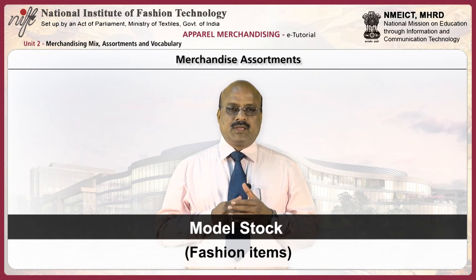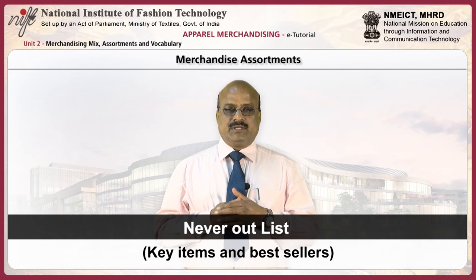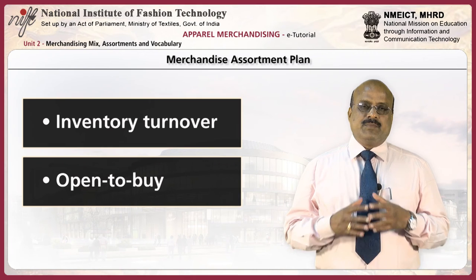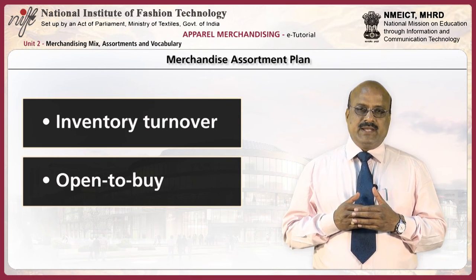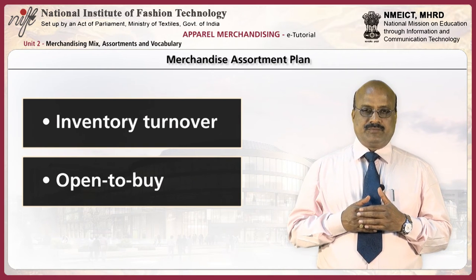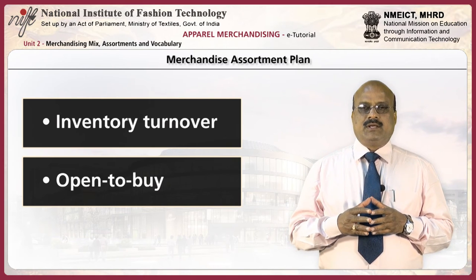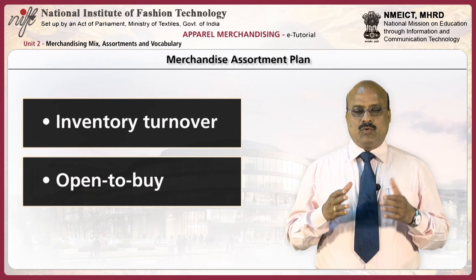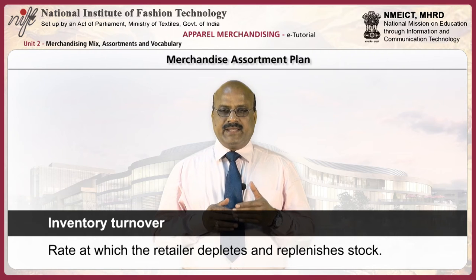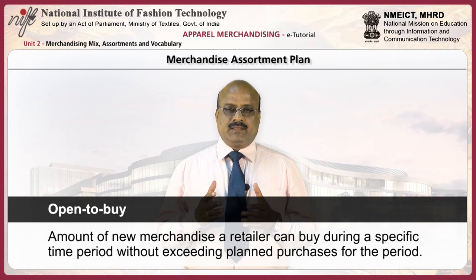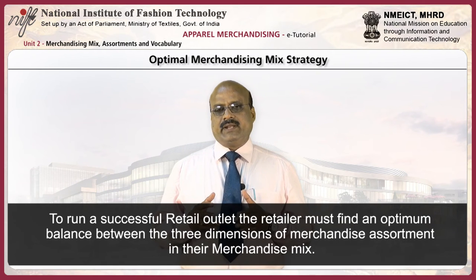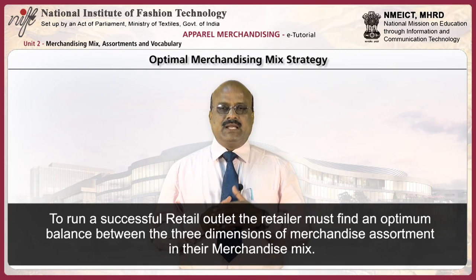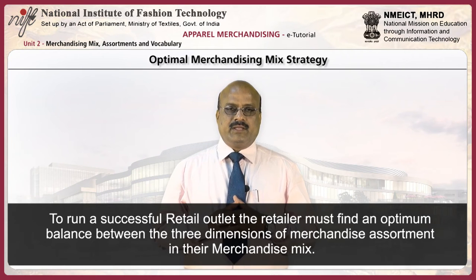The lists of merchandise to be developed are: basic stock list (staple goods), model stock list (fashion items), and never-out list (key items and best sellers). Merchandise assortment planning requires continuous monitoring and adjusting the types of product lines needed and dropped from the merchandise mix. Two widely used methods to control assortment and support are inventory turnover and open to buy. Inventory turnover is the rate at which the retailer depletes and replenishes stock. Open to buy is the amount of new merchandise a retailer can buy during a specific time period without exceeding planned purchases for the period.